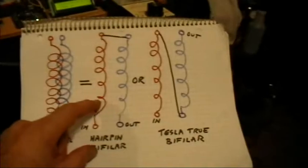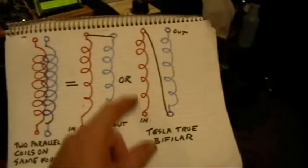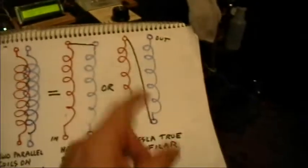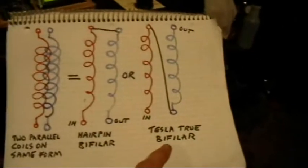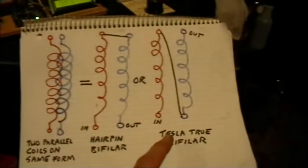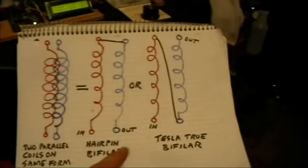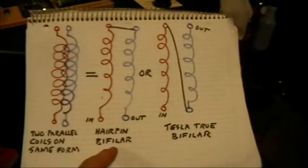But there's no reason, since the current is always going in the same direction through this Tesla true bifiler, there's no reason to expect that the inductance or the magnetic field would be decreased the way that it is in this coil over here.